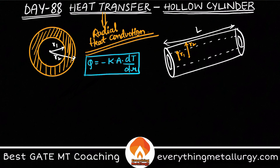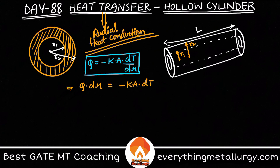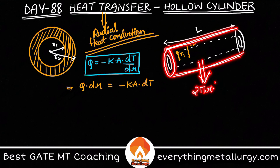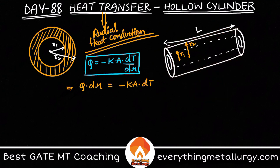Rearranging, we get Q·dr = −k·A·dT. Since heat transfer is radial, we consider the lateral surface area, which is 2πrL (perimeter times height). Substituting: Q·dr = −k·(2πrL)·dT.